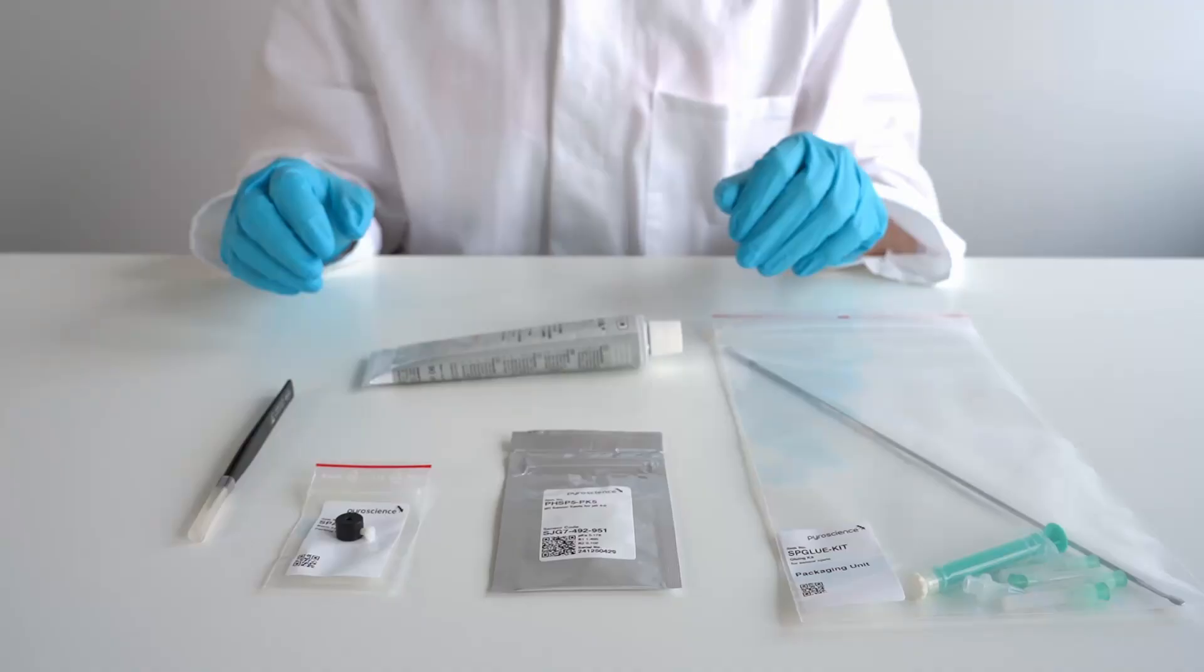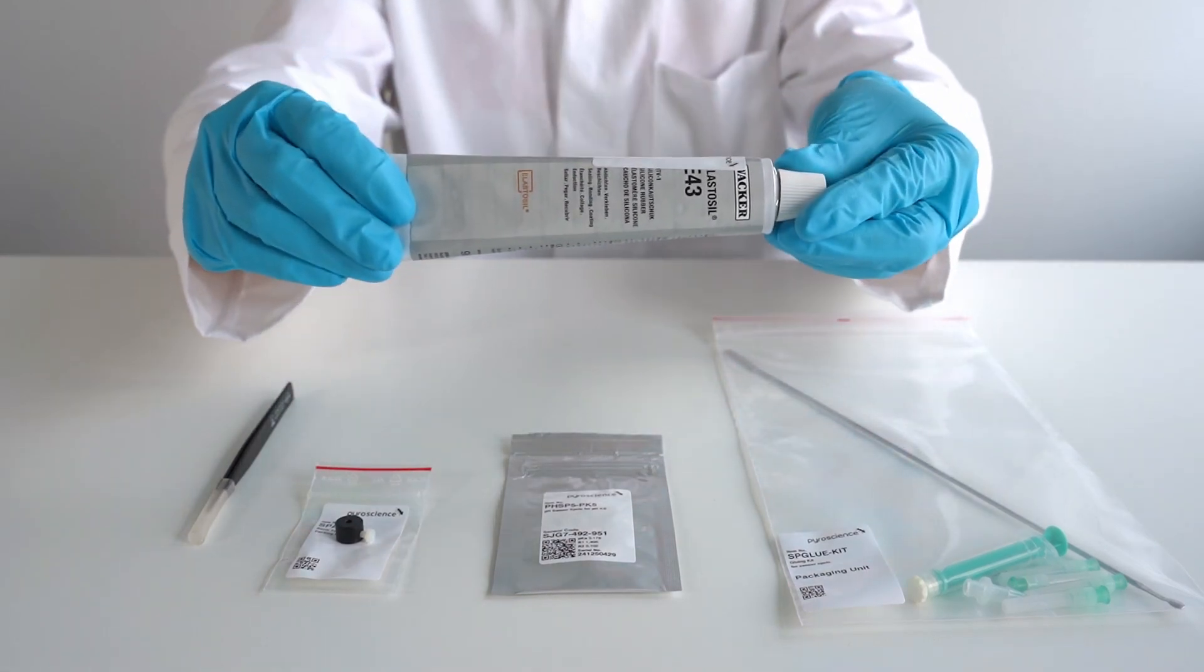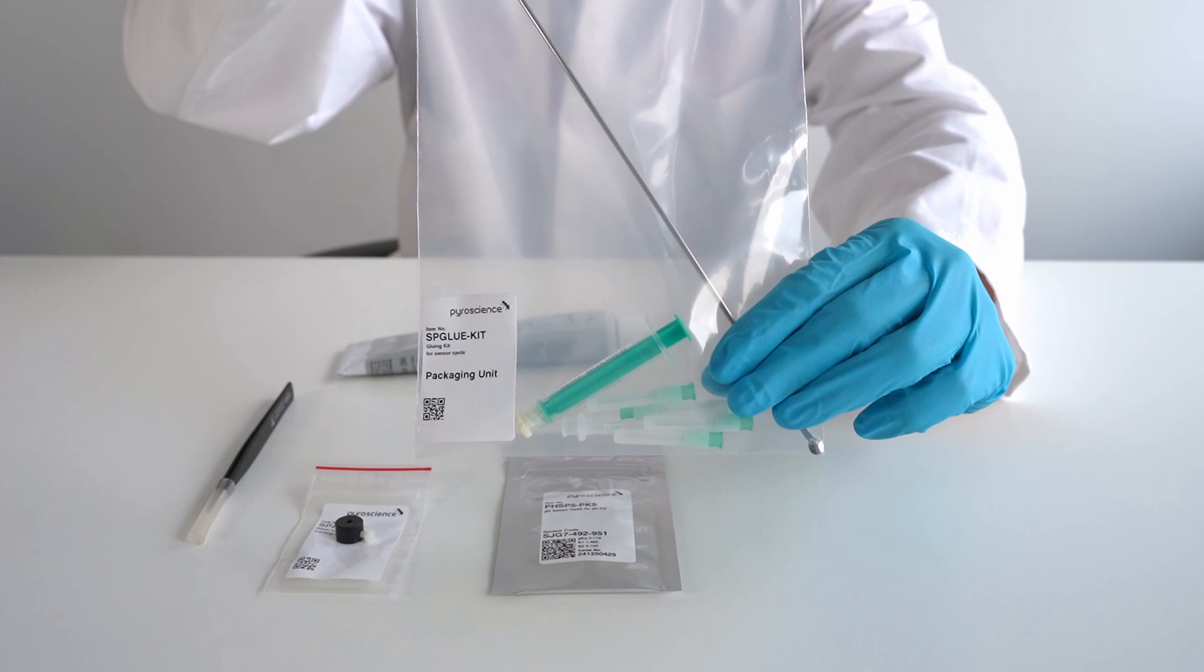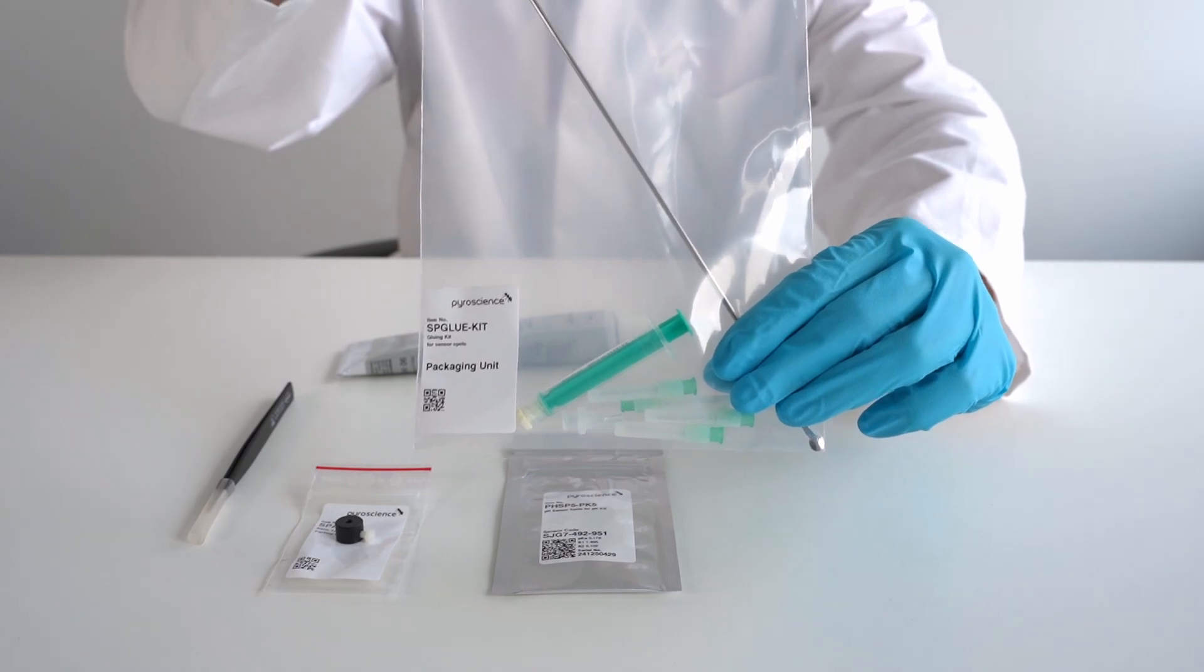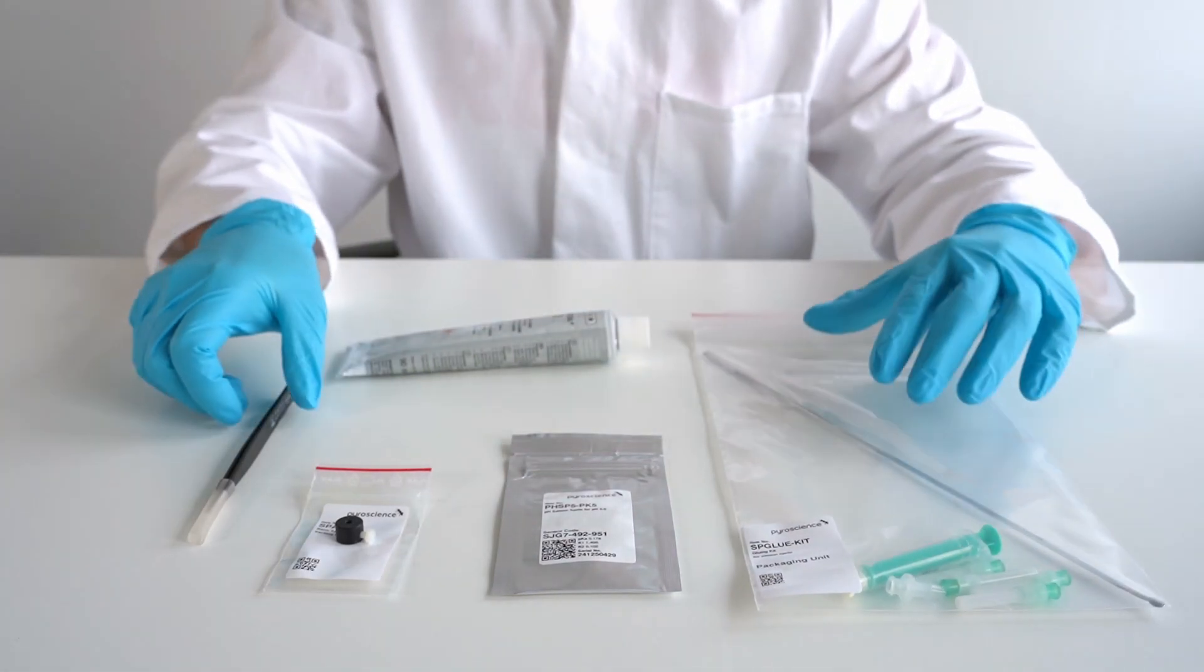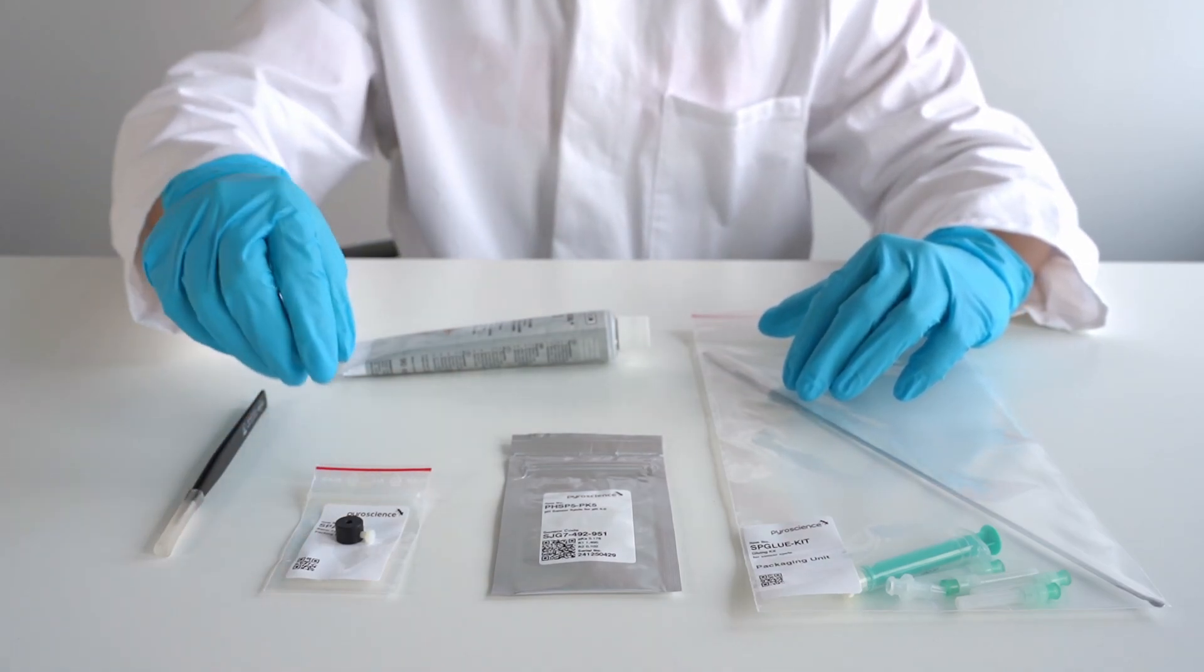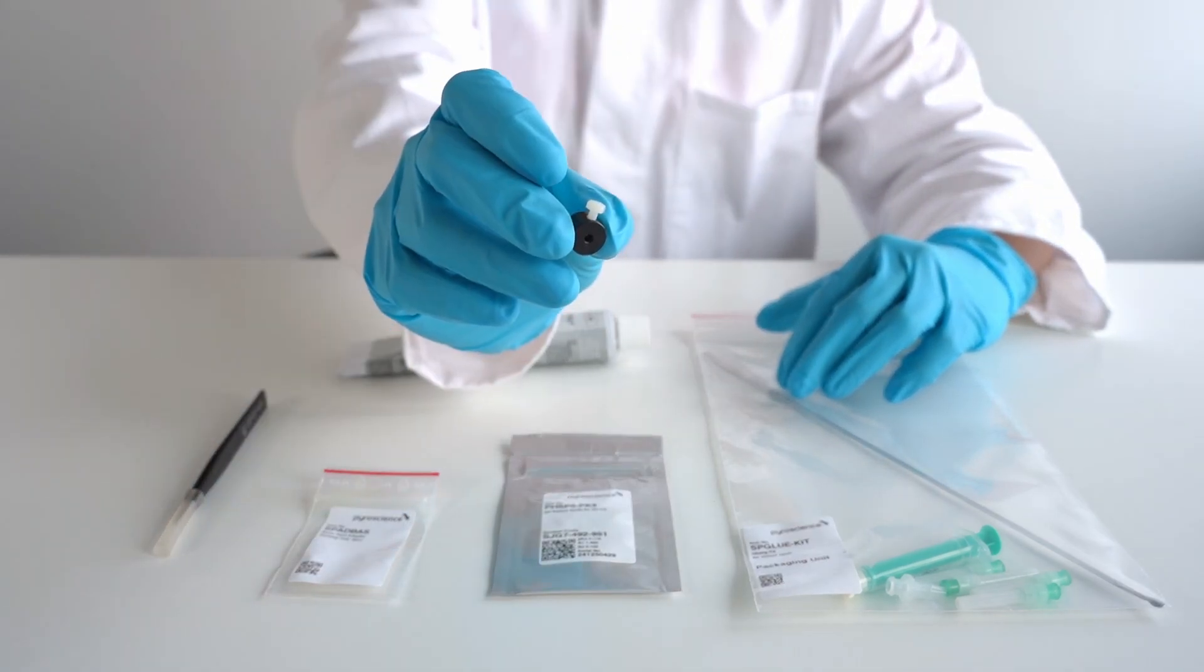The required items are the silicone glue SP-glue, the glue kit SP-glue kit which includes a two milliliter disposable syringe with a flat needle and a long spatula, and a tweezer.